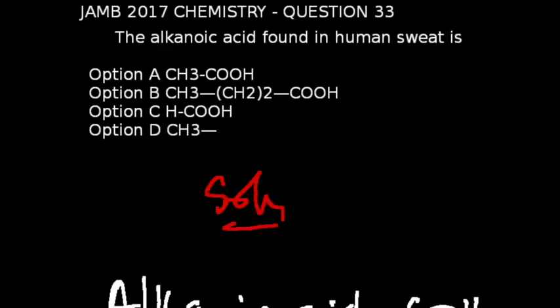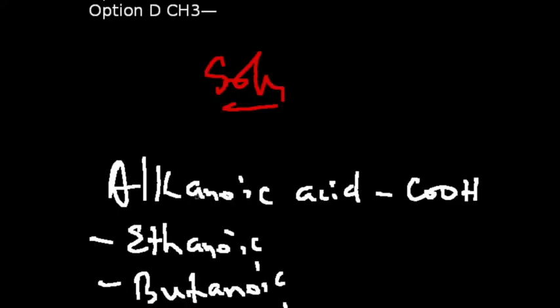JAMB 2017 chemistry exams is what we're looking at. Question number 33. The alkanoic acid found in human sweat is, what I want us to know is, alkanoic acids are organic compounds derived from the alkane family and they contain the functional group carboxylic.